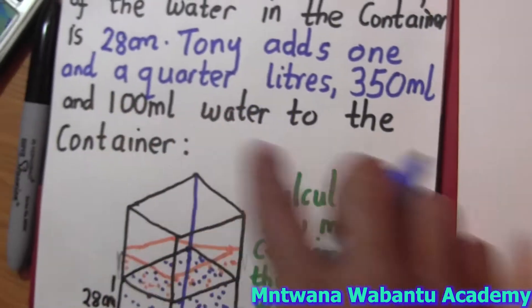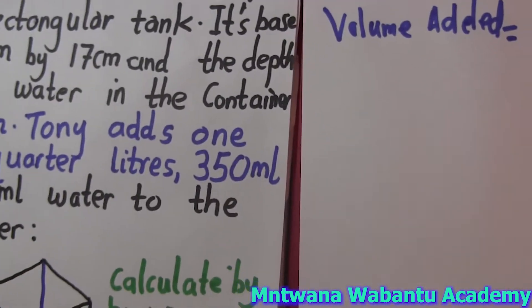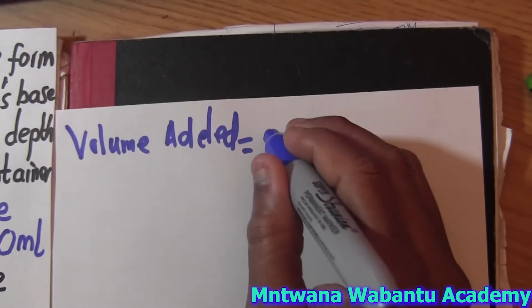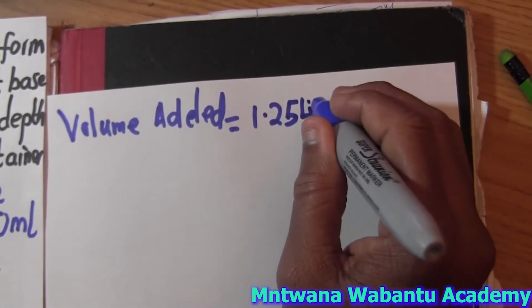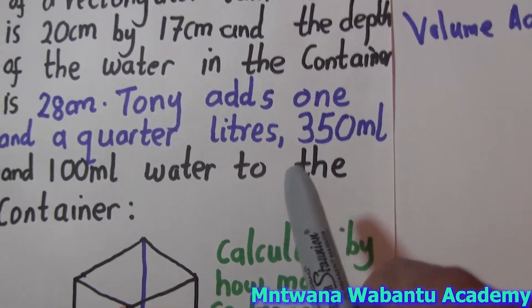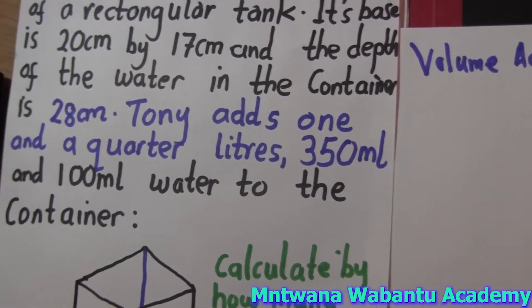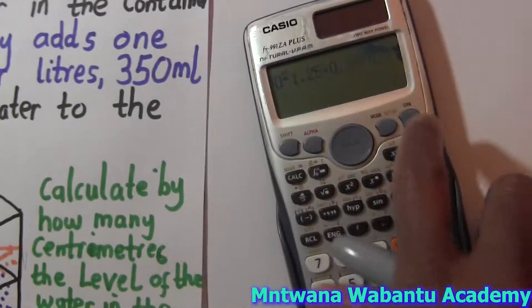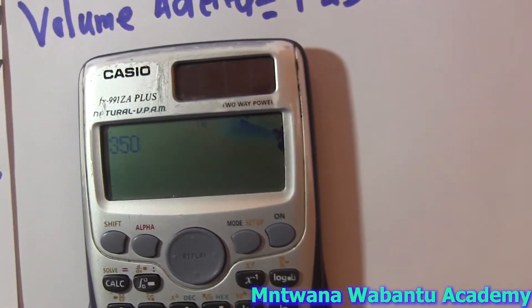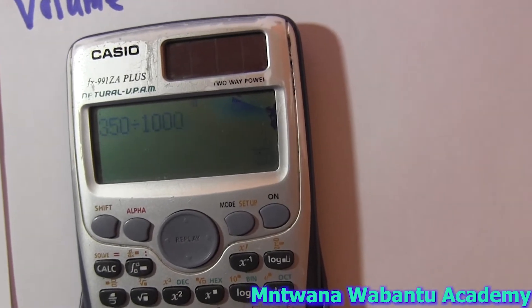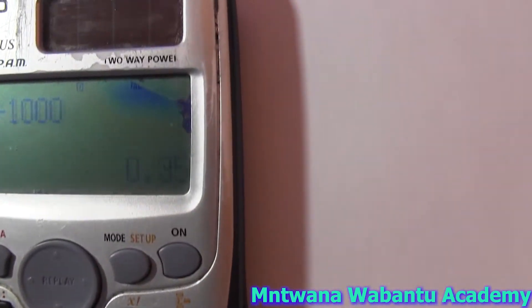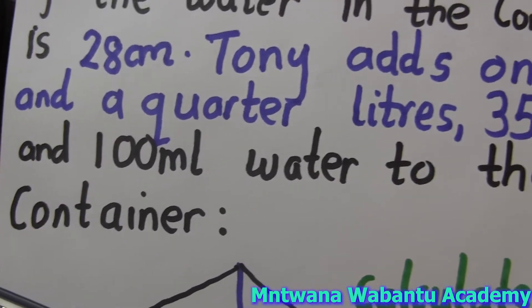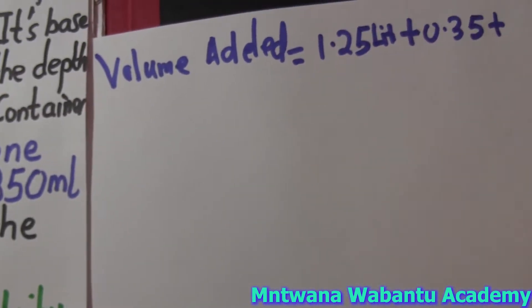The volume added: the first one is one and a quarter liters, which is 1.25 liters. Plus the next one — 350 milliliters. To convert 350 milliliters to liters, divide by 1000, which gives 0.35 liters. And the last one is 100 milliliters divided by 1000, which gives 0.1 liters. When you divide milliliters by 1000, they become liters.